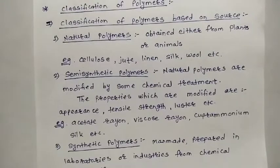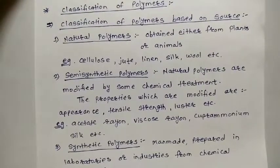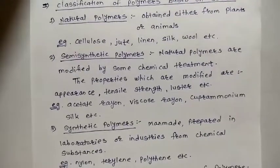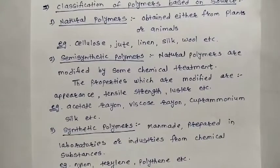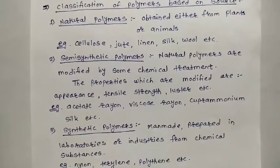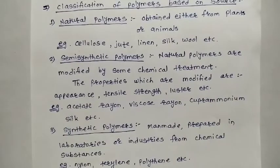The three types based on source are: first, natural polymers; second, semi-synthetic polymers; and third, synthetic polymers. Natural polymers are those obtained either from plants or animals — these are the natural sources. Examples include cellulose, which is present in spinach, as well as jute, linen, silk, and wool.